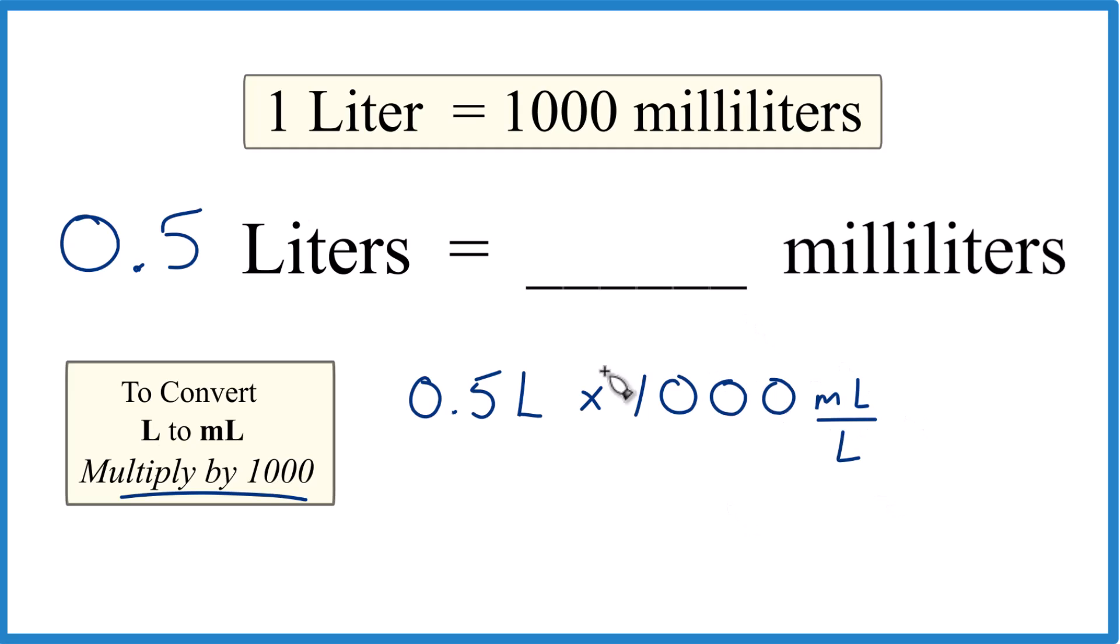Now with our conversion factor here, we multiply liters on the top and bottom. So 0.5 times 1,000, that is 500. And the units, that's milliliters. That's what's left.